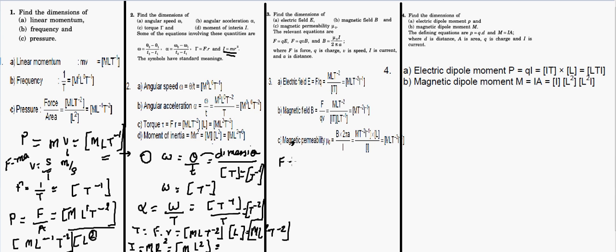For electric field, from F = qE, we get E = F/q. Force has dimension MLT⁻², and charge has dimension IT (current I times time T). So the dimension of electric field is MLT⁻³I⁻¹.